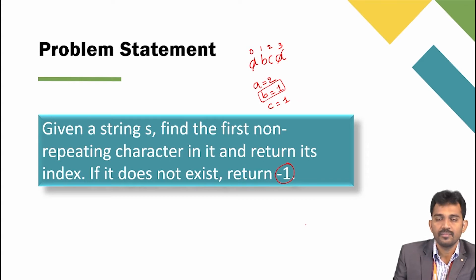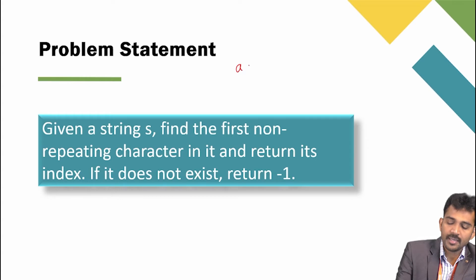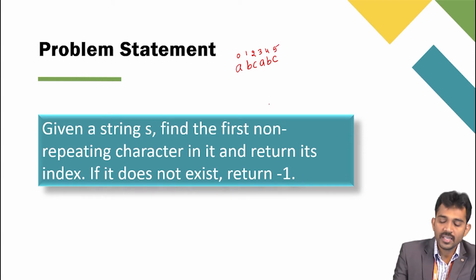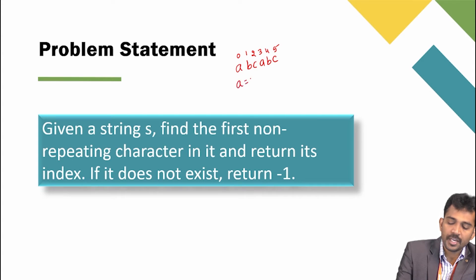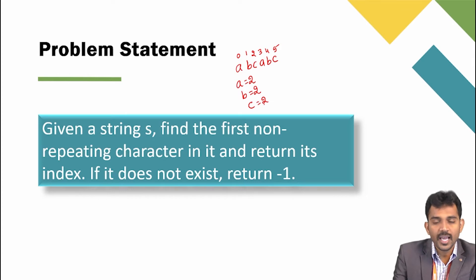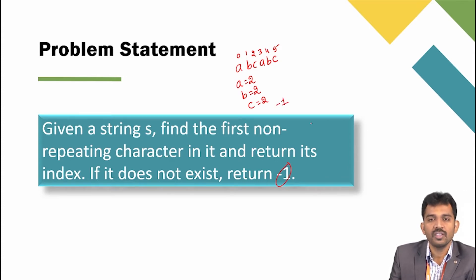For another example, if your input is A, B, C, A, B, C — the indexes are 0, 1, 2, 3, 4, and 5. A is repeated two times, B is repeated two times, and C is repeated two times. All characters are repeated, so in this case you should return minus 1 as your index.